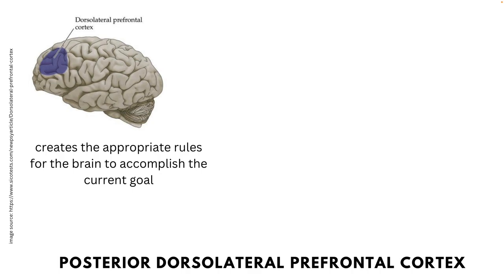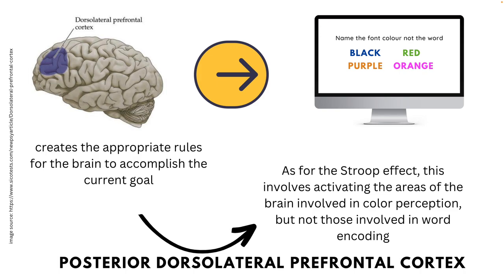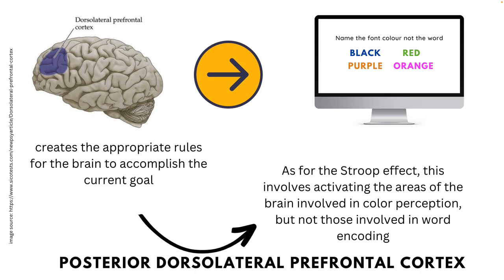The posterior prefrontal cortex creates the appropriate rules for the brain to accomplish the current goal. In the context of the Stroop effect, this involves activating areas of the brain involved in color perception but not those involved in word encoding. It counteracts biases and irrelevant information — for instance, the fact that the semantic perception of the word is more striking than the color in which it is printed.